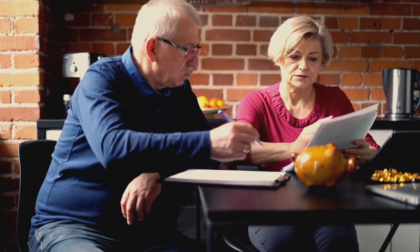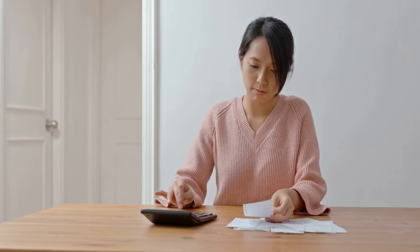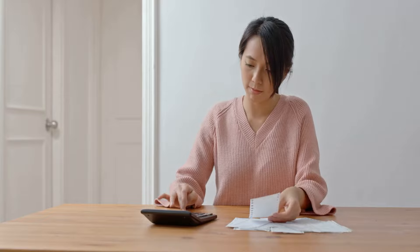First, identify your income sources. Then list your expenses. These can be fixed, like rent or mortgage payments, and variable, like eating out or entertainment. The goal is to ensure that your income covers all these costs and leaves room for savings.